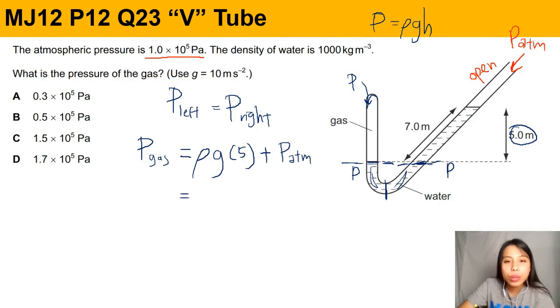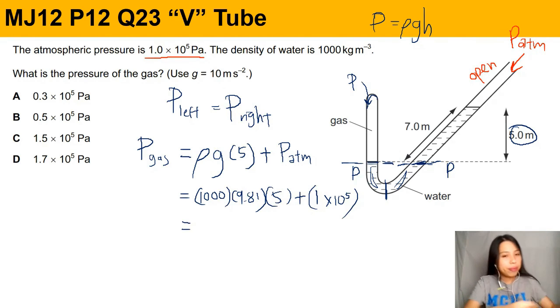So we plug in all the values. Density of water, 1000, g, 9.81, 5, plus the whole atmospheric pressure. So 1.0 times 10 to the 5 Pascal. Okay, add all together. So 1000 times 9.81 times 5, plus 1 times 10 to the 5.